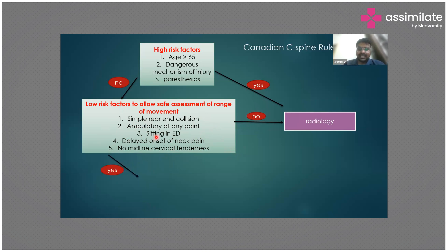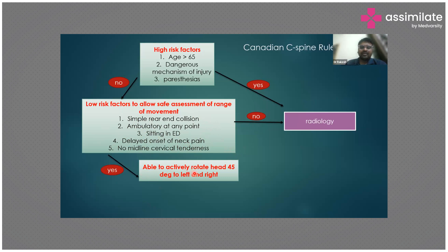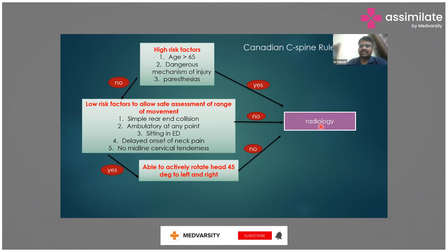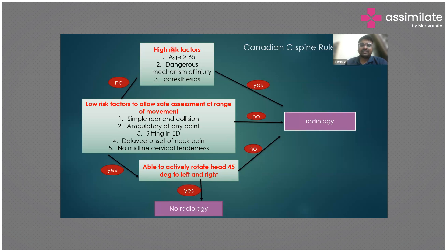If all low risk factor answers are yes, ask the patient to actively rotate their head 45 degrees to the left and 45 degrees to the right, and assess for any increase in pain or paresthesias in the arms. If the patient is unable to rotate, or is developing paresthesias during rotation, proceed to radiology. Otherwise, no radiology is required. This is a three-step process: look for high risk factors, screen for low risk factors, then assess active neck rotation.